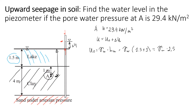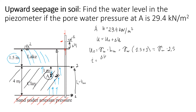Now let's find the additional pore pressure from upper seepage, which starts from the bottom of the clay layer and goes to the top. Remember that seepage can only occur in soil — there is no seepage in the lake. The hydraulic gradient for the clay layer is found by measuring the difference in water levels between two points. Water flows from the top to the bottom of the clay layer, so L = 4 meters, and the hydraulic gradient equals delta h divided by 4.